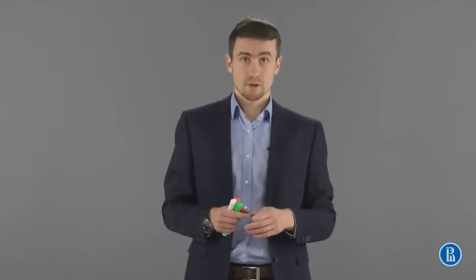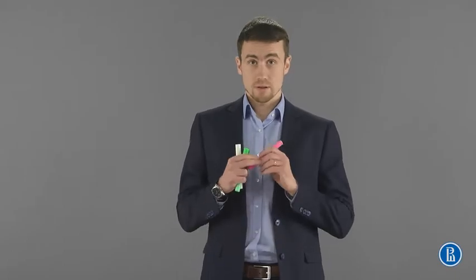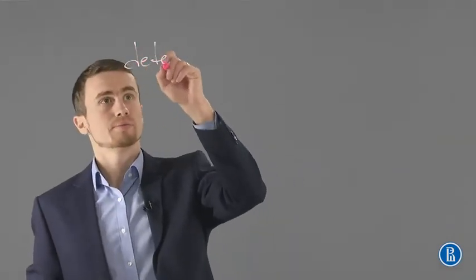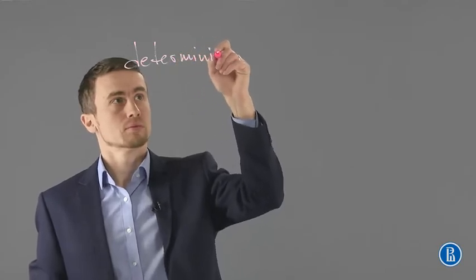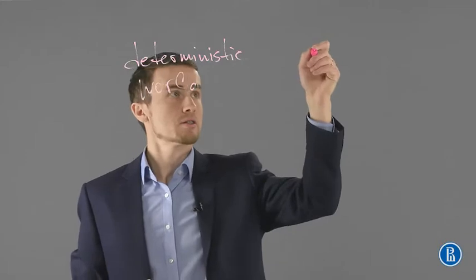It is very common to assume that both outcomes can occur with probability one-half. In some sense, you move from a deterministic world to a stochastic world. I would like to explain the difference between these two worlds. Let me draw one simple table: here I have the deterministic world, and here the stochastic world.